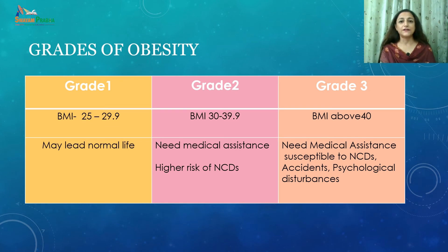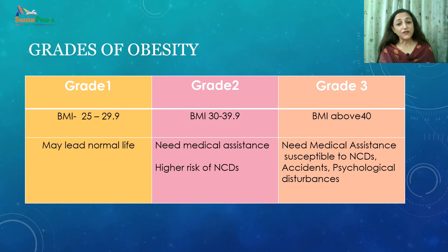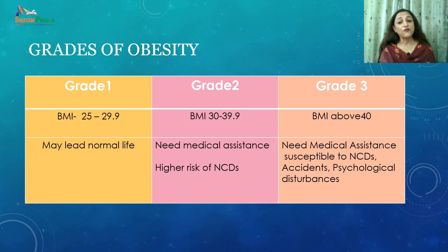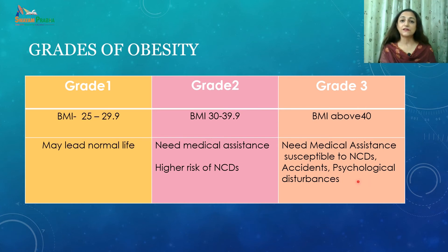Let us understand the grades of obesity. Grade 1 obesity (BMI 25–29) — the person may lead a normal life. Grade 2 obesity (BMI 30–39.9) — this person needs medical assistance and is at higher risk of non-communicable diseases. Grade 3 obesity (BMI above 40) — the person needs medical assistance, is susceptible to non-communicable diseases, accidents, and psychological disturbances.